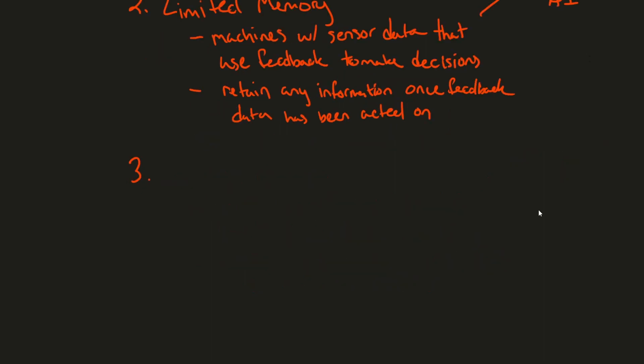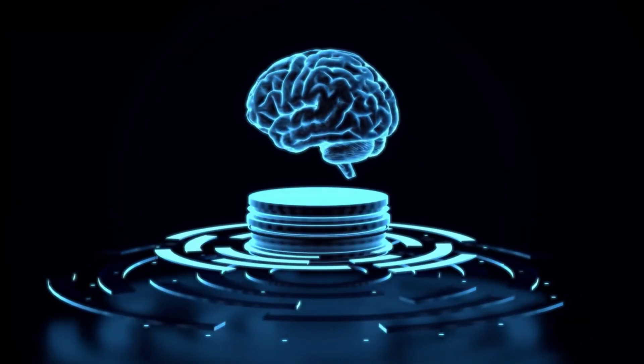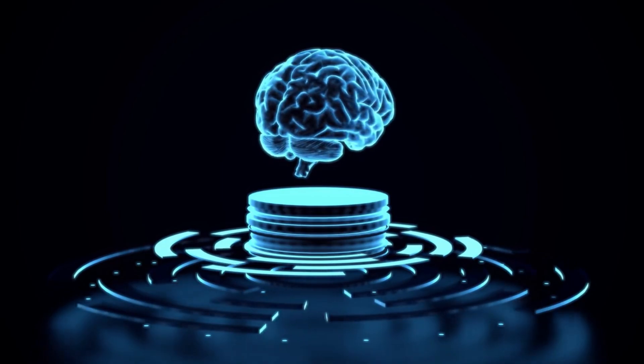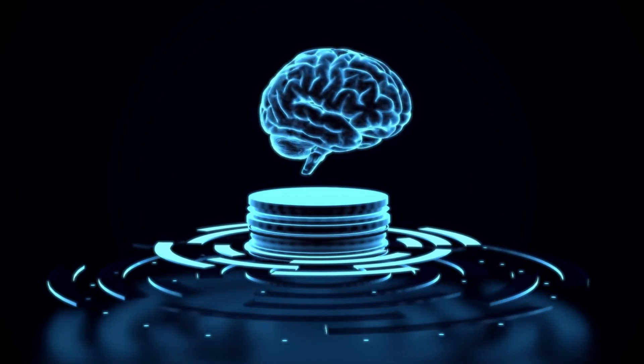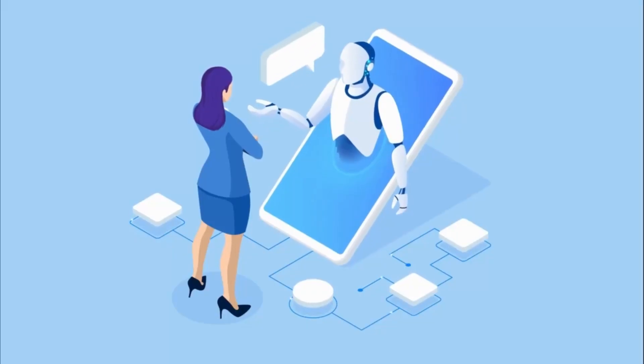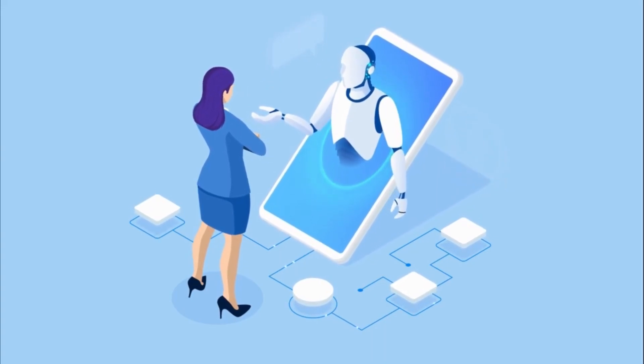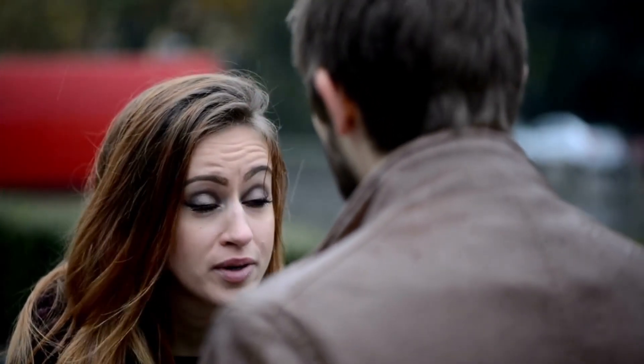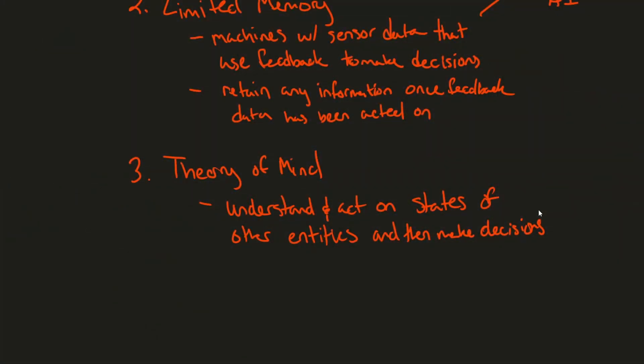Moving on to number three is called theory of mind. Now this is where things start getting a little trippy because these types of AI systems are able to understand and act on states of other entities and then make decisions. So an example of this one might be some virtual chatbot or customer service agent that can respond based on the emotion of the customer. So if someone's mad writing into a chatbot, the chatbot realizes and sympathizes with the person that is typing on the other end and makes decisions based on emotional state. Basically, at this point, we're kind of going into the territory of being able to use AI to interact with humans.